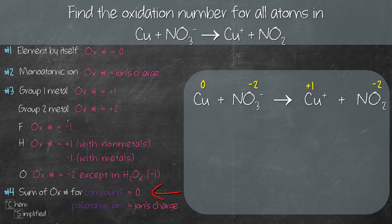Moving on to rule number four. The sum of oxidation numbers in a compound equals zero. The compound that we have in this equation is NO2. We can use this rule to find out the oxidation number for nitrogen.